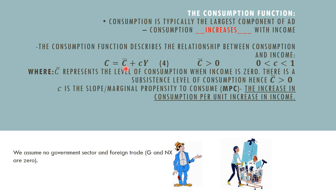For instance, if somebody has a zero income, they may need to beg or borrow in order to have sufficient food and clothing necessary to survive. So autonomous consumption is independent of the level of income. The induced component, little cy, shows you how consumption varies as income varies.